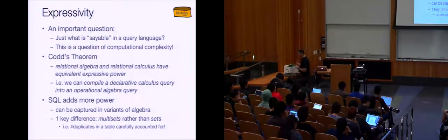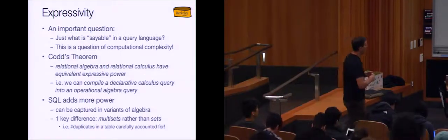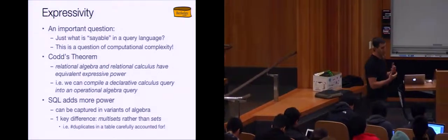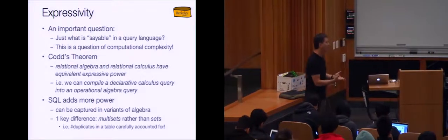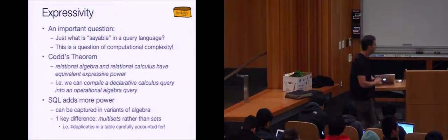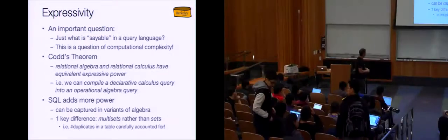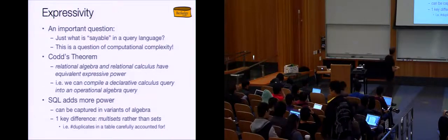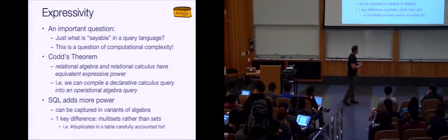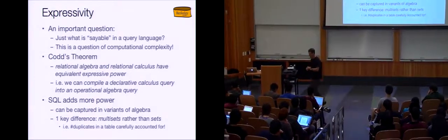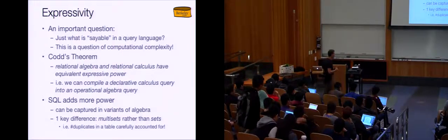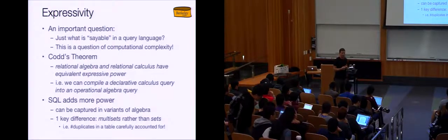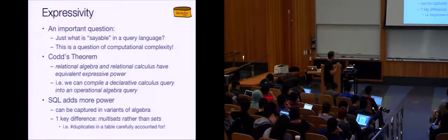What Codd's theorem means for us is that we can take declarative statements à la SQL and compile them down into operational statements à la query plans. This pointed the way towards being able to take high-level declarative statements and have a natural implementation for them. SQL is more powerful than the relational calculus, but it can be captured with a set of operations that looks a lot like the algebra. The iterators in our relational databases look a lot like the relational algebra, so you don't have to go much further than the bones of the algebra to get all of SQL.